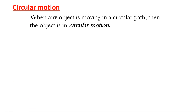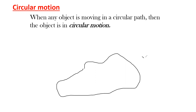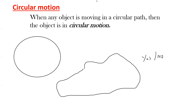In this session we'll discuss circular motion. When an object moves in a circular path, we call that a circular motion. For example, if an object is not moving in a circular path, it's not circular motion. When the object is moving in an exactly circular path, we call that circular motion. In circular motion, the object continuously changes direction.